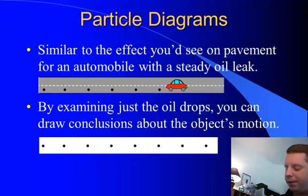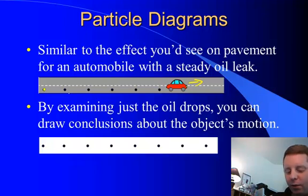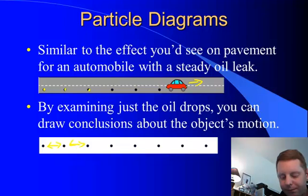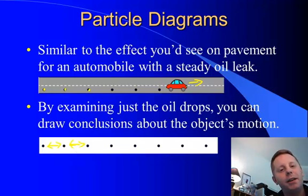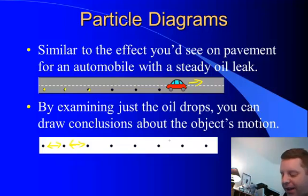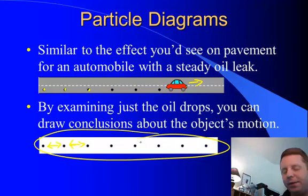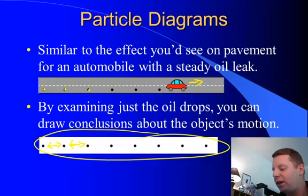For example, if your car is moving to the right with a steady oil leak, and when you examine the oil drops you see they are always the same distance apart, it should be easy to see that this is probably occurring because your car was moving at a constant velocity. What you can't tell from just the oil drops is whether your car was moving to the right or to the left — you have to see the car — but you can tell it was moving at a constant velocity.